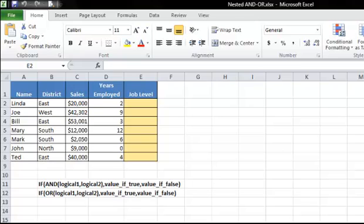This data shows information about a sales team, their name, district, sales, and how many years they've been employed. Now let's suppose you want a formula in column E, the job level column, that will assign a job level based on two different criteria.